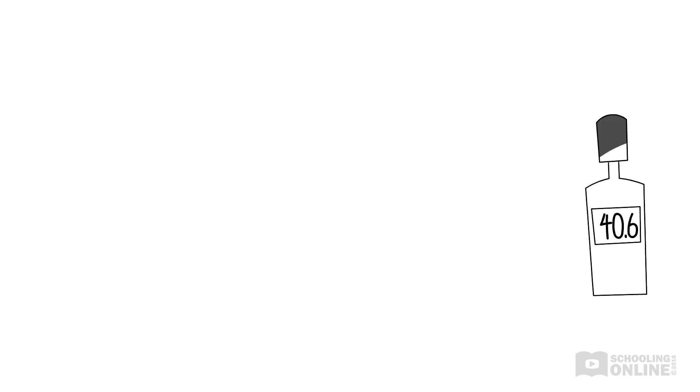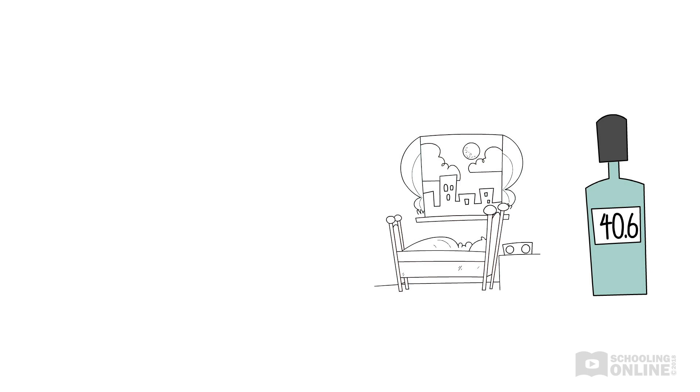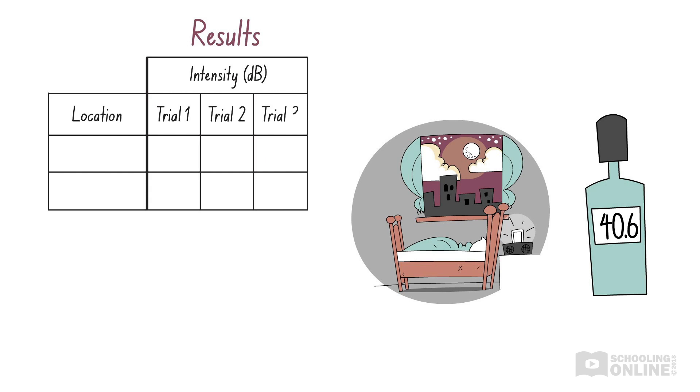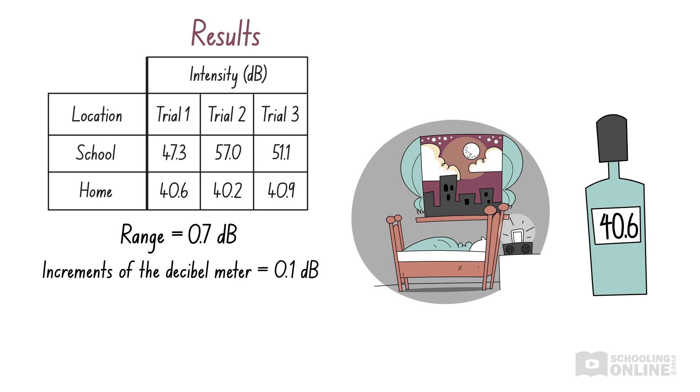Since the experimental report is due tomorrow, your teacher suggests that you collect more data when you get home. Thankfully, your parents are out and the house is quiet. You repeat the entire experiment and collect a new set of results. As we can see, the difference between each measurement of sound intensity is much smaller than before, being less than one decibel. Even though these differences are larger than the increments of the decibel meter, we can say that the measurements collected at home are more reliable than those collected at school.